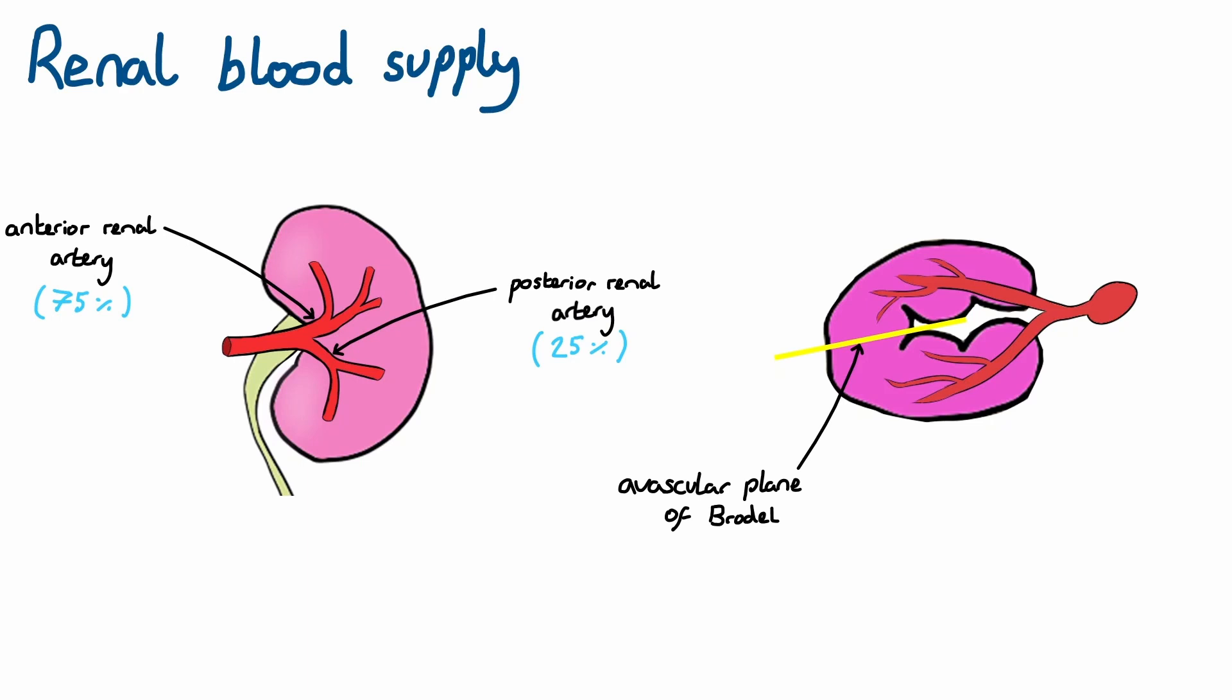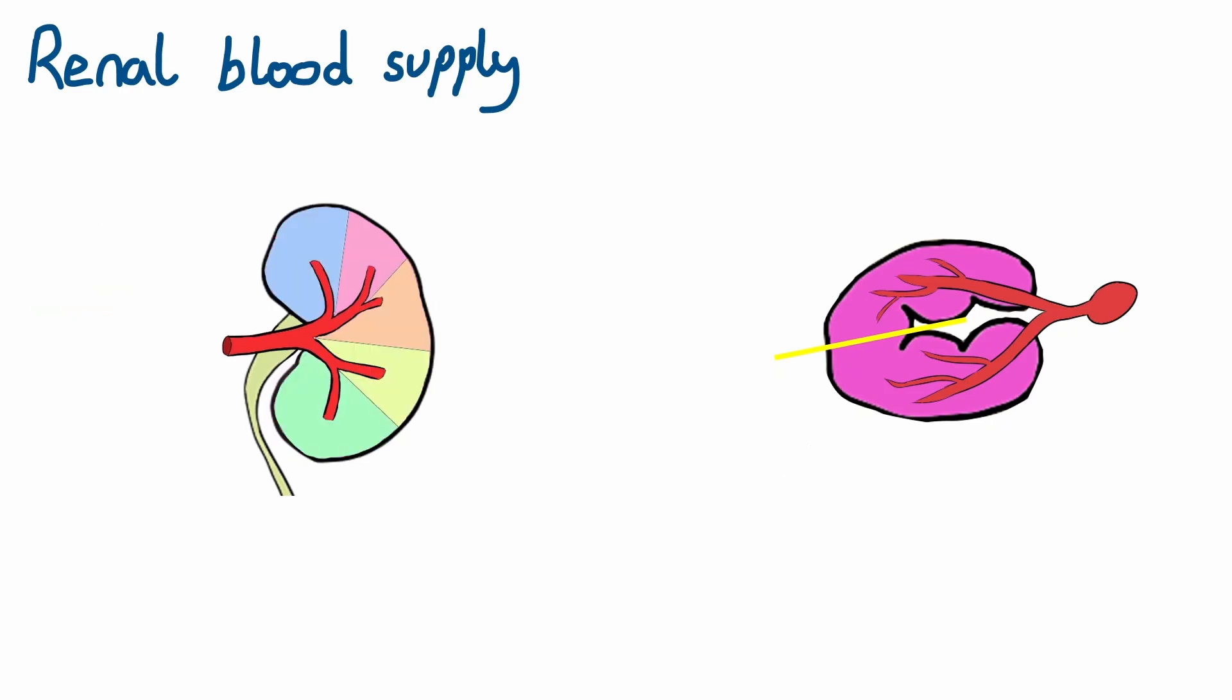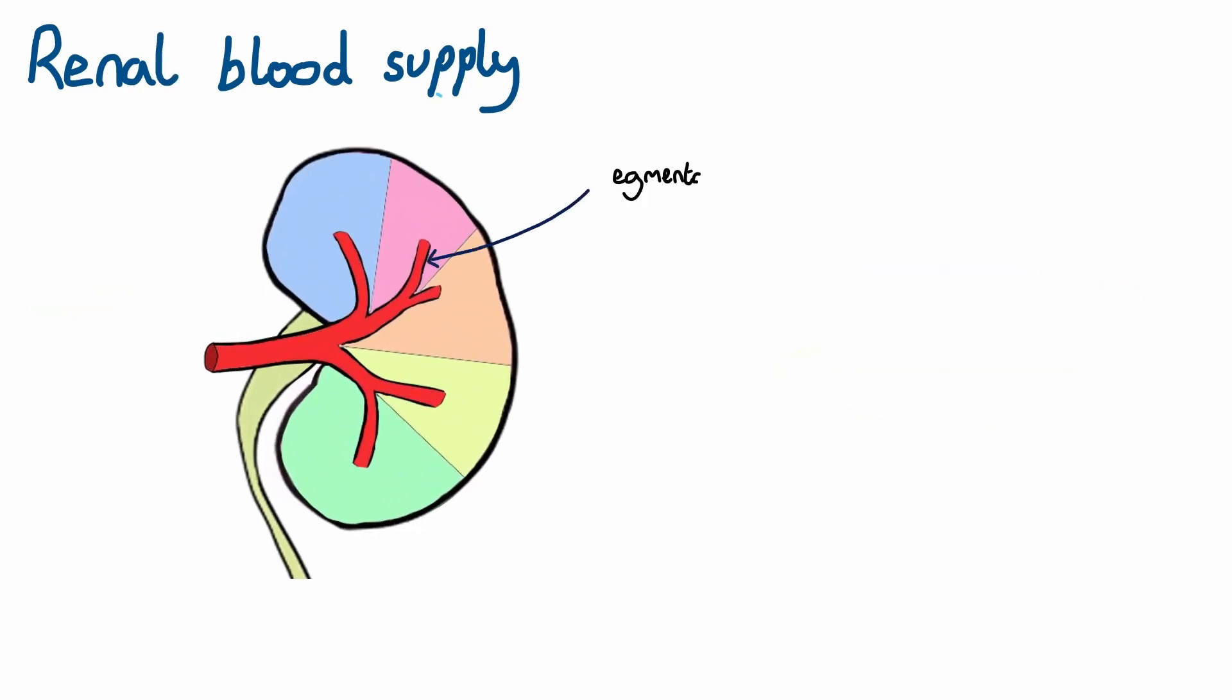After dividing into the anterior and posterior renal artery, the blood vessels subdivide further into segmental arteries. There are five of these per renal artery, with each supplying a different segment of the kidney.